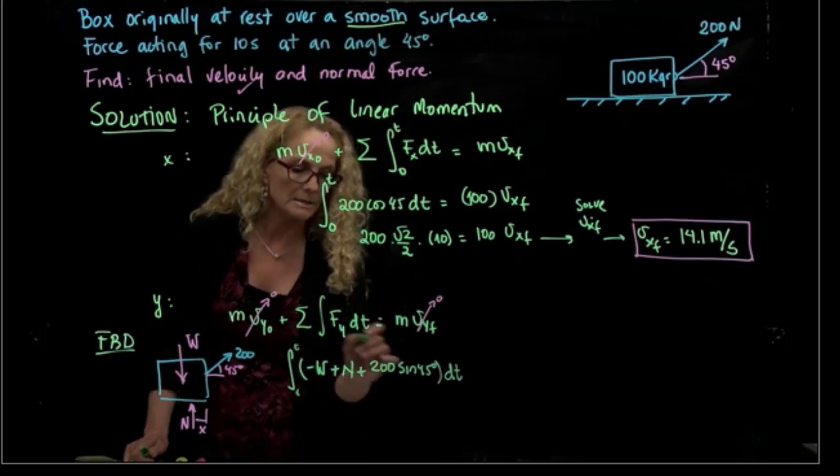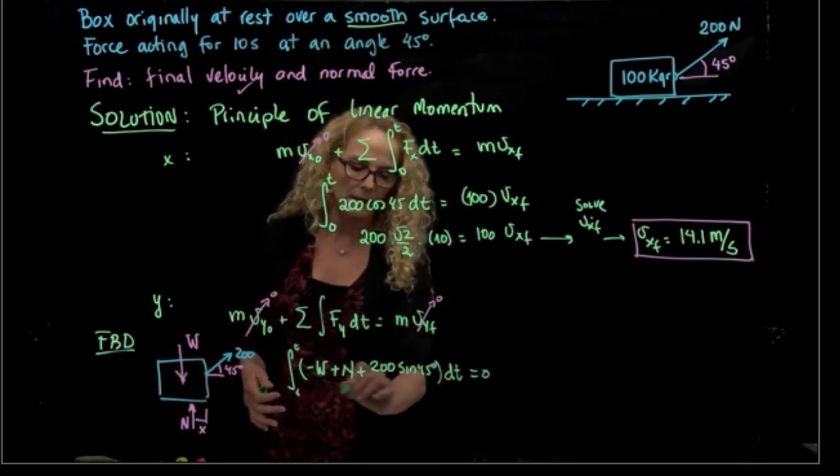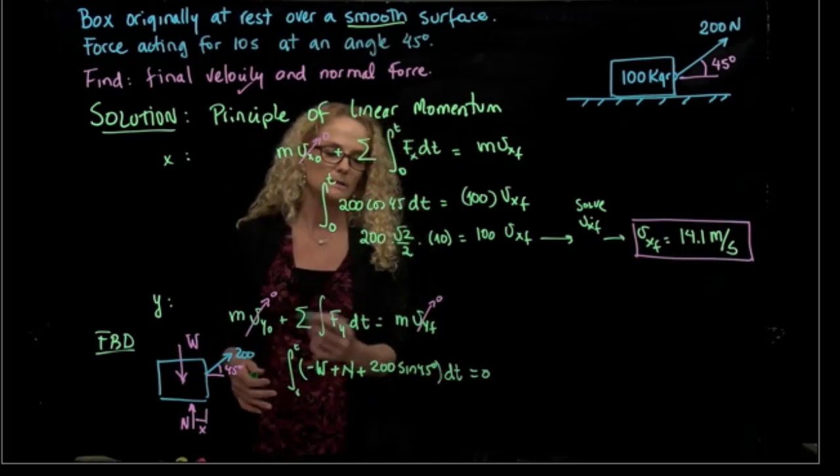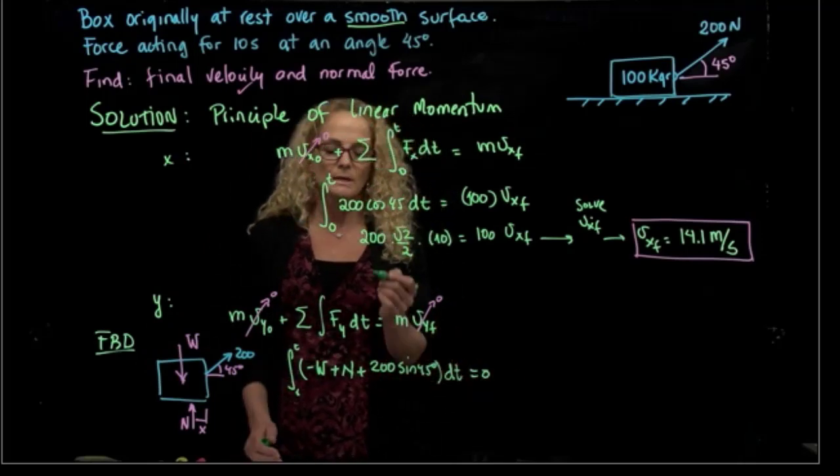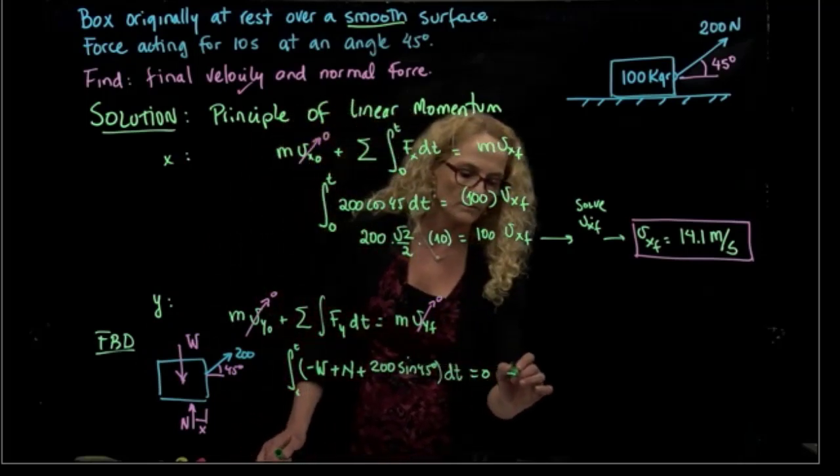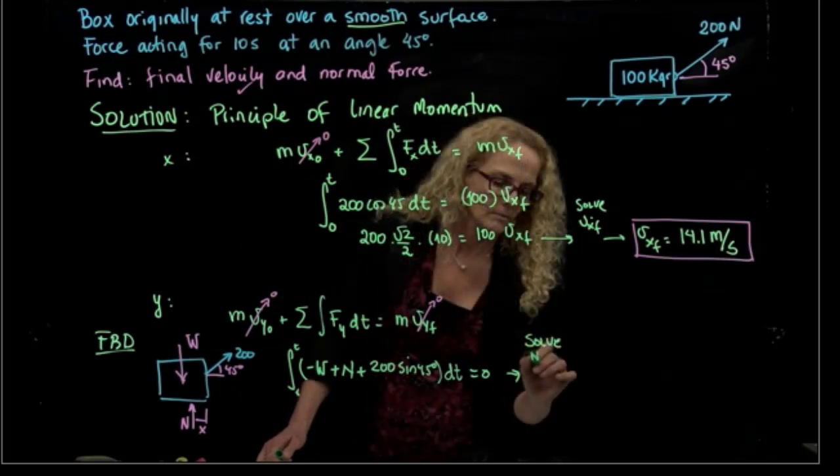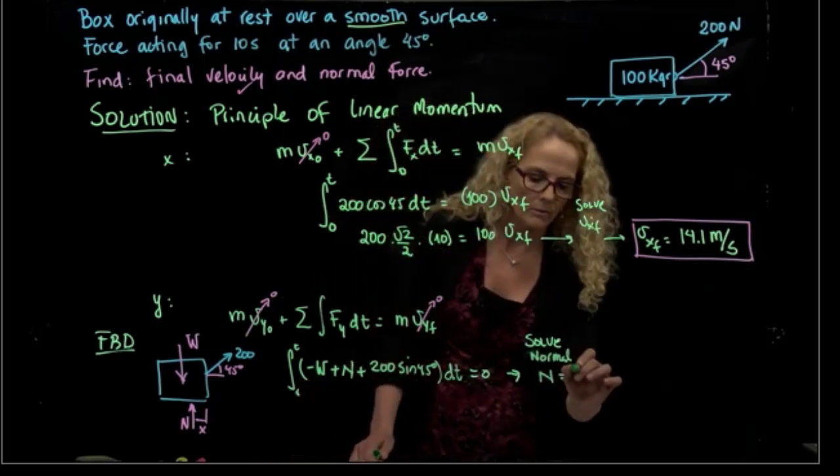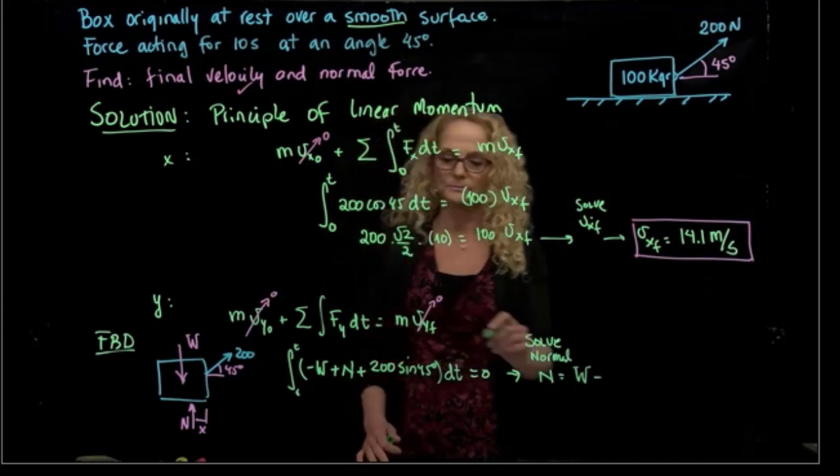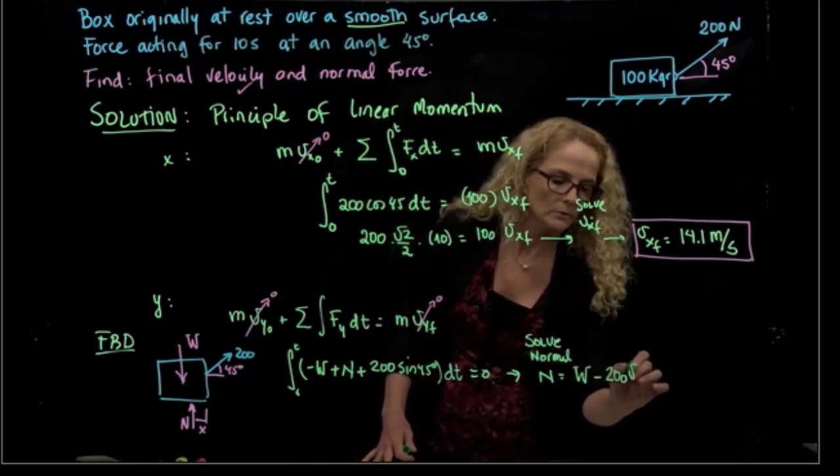Since that integral is equal to zero, it's the same as saying that this here is equal to zero. I don't even have to integrate that expression, because it's equal to zero. So I solve for the normal, and I have that the normal force will be equals to the weight minus 200 square root of 2 over 2.